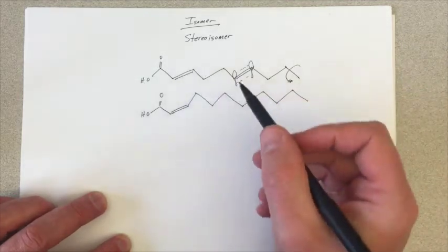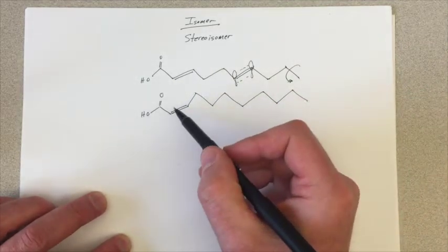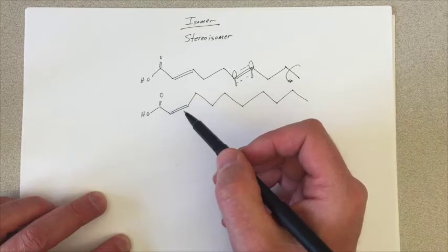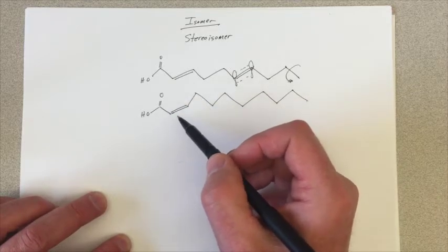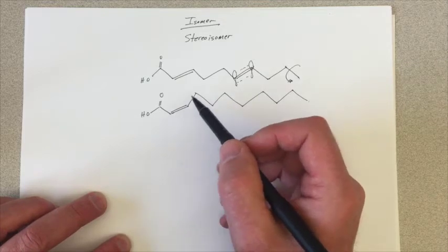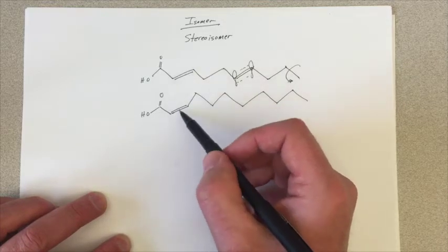We can look at it and say, well, we've got the same number of atoms, the same number of hydrogens, but really the orientation of the molecule in three-dimensional space is different between this and this double bond.